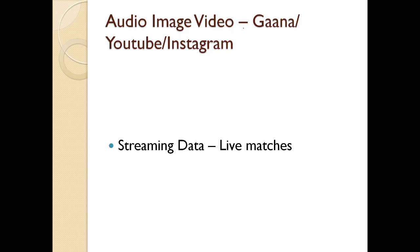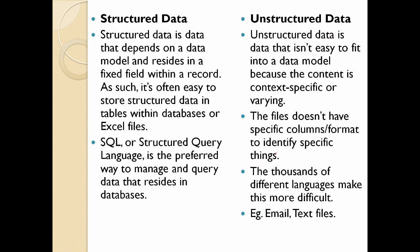Audio, image, and video — YouTube and Instagram are good examples. Now the theory part: Structured data is data that depends on a data model and resides in fixed fields within a record. Fixed field means fixed size — columns and rows. That's why storing and accessing it is easy. Another example is SQL — Structured Query Language. Unstructured data has no fixed data model — no table, no fixed row or column.